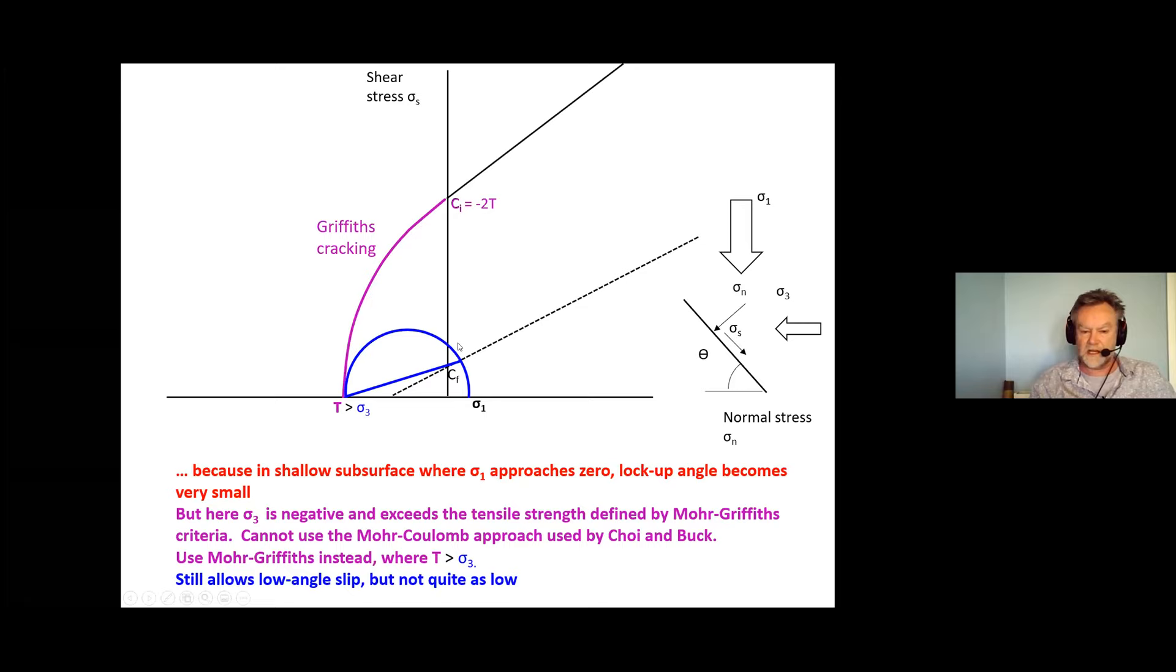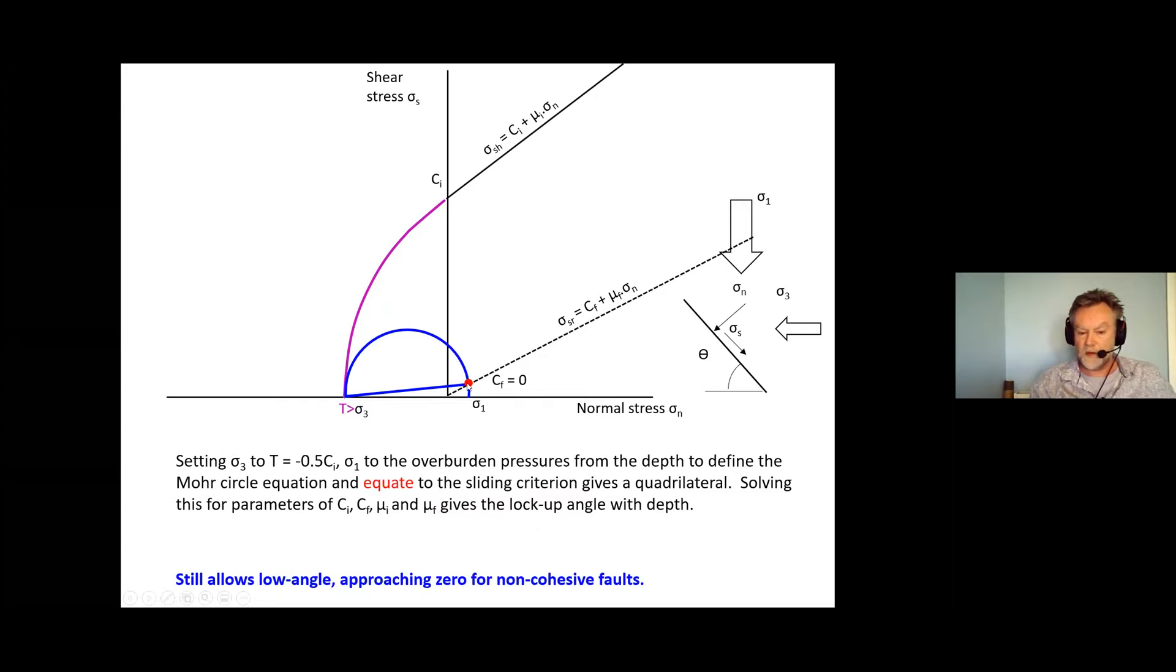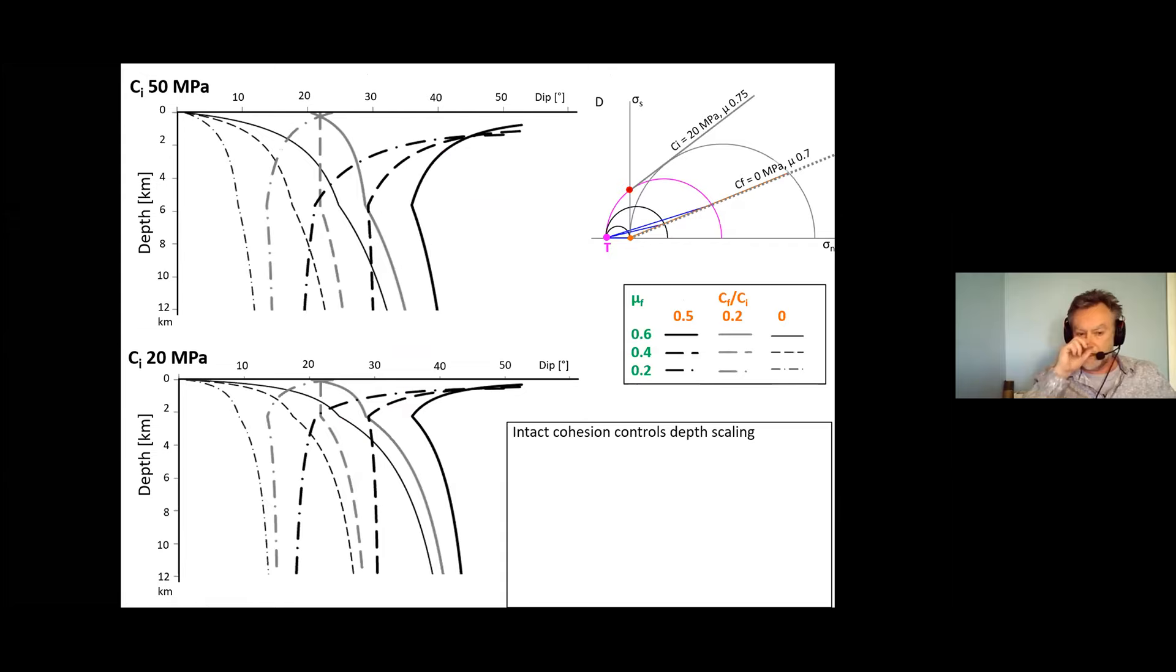The same principle applies though. You have a Mohr circle which is just insufficient to cause failure by fissuring so it's just not going to quite reach, sigma 3 is not going to quite reach t. We can anchor it to that and we can change the size of this Mohr circle and locate what's happening at that point. What we find is that we still allow low angle slip which approaches zero for non-cohesive faults in the very shallow subsurface. We can work out what the value of the angle is by determining this point by equating the Mohr circle to the sliding criterion, develop a quadratic equation and solve that and as a result predict lock-up angles for Mohr-Griffiths conditions.